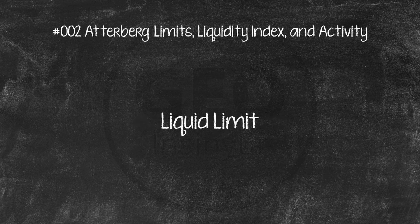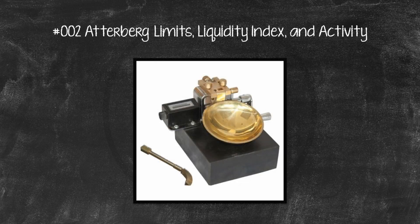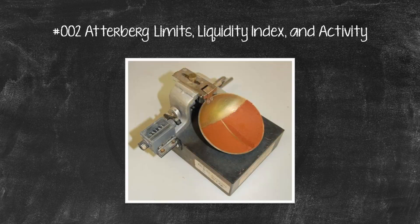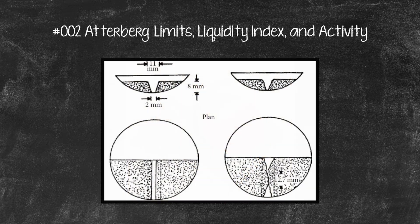The liquid limit of a soil is generally determined by the standard Casagrande device. This device consists of a brass cup and a hard rubber base. The brass cup can be dropped onto the base by a cam operated by a crank. To perform the liquid limit test, one must place a soil paste in the cup. A groove is then cut at the center of the soil pat with the standard grooving tool. By using the crank-operated cam, the cup is lifted and dropped from a height of 10 millimeters. The moisture content, in percent, required to close a distance of 12.7 millimeters along the bottom of the groove after 25 blows is defined as the liquid limit.